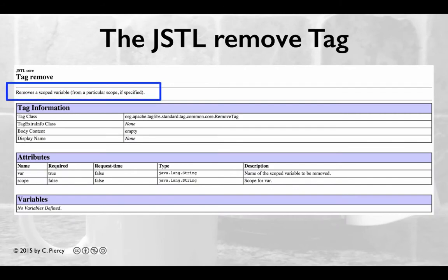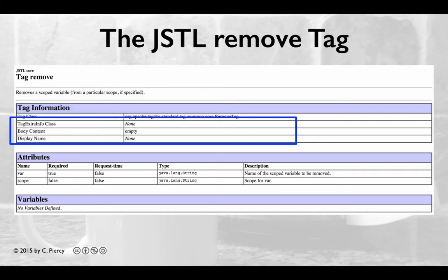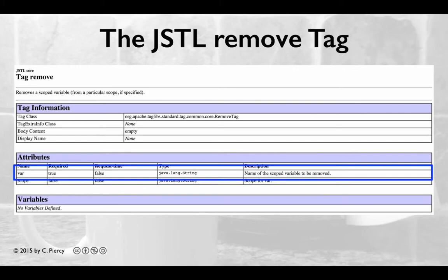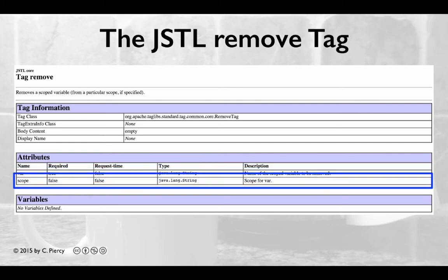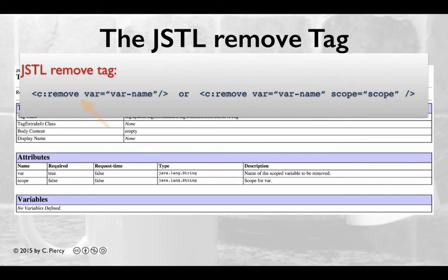The JSTL remove tag is used for removing an attribute from a specified scope or from all scopes. Remember, scopes can include page, request, session, and application scope. As seen in the remove tag documentation, this will have two attributes: the variable that we want to remove and the scope. If we leave the scope off, as it's optional, then by default it will remove the variable from all scopes. The general format of the remove tag is shown here. In the first instance, we are simply removing the variable from all possible scopes — notice we do not include the scope parameter. If we want to remove a variable from a specific scope, we would use the second format where we simply include the scope parameter.